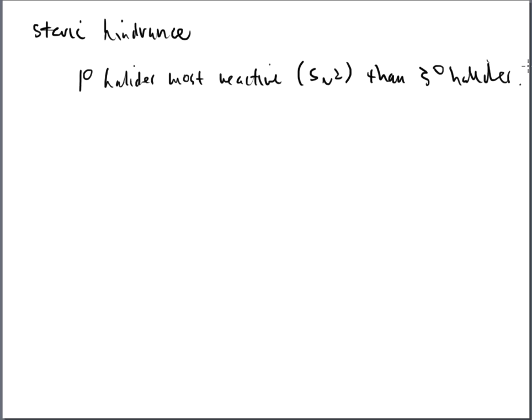Tertiary halides are actually so slow that we just say they will not react — there's no reaction as far as SN2 is concerned. Remember, carbon seeing both people at the same time — carbon's the cheater. The tertiary halides slow down the process so much that we say SN2 is not going to happen here. Carbon will not be a cheater, so the mechanism is going to be different when substitution actually occurs.